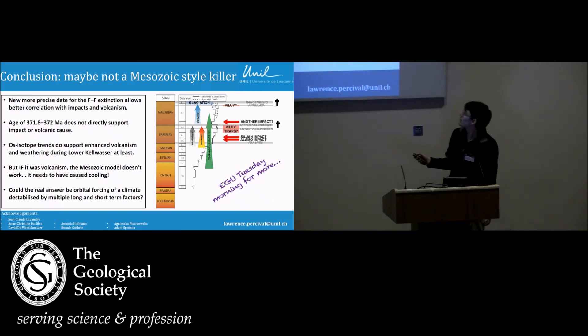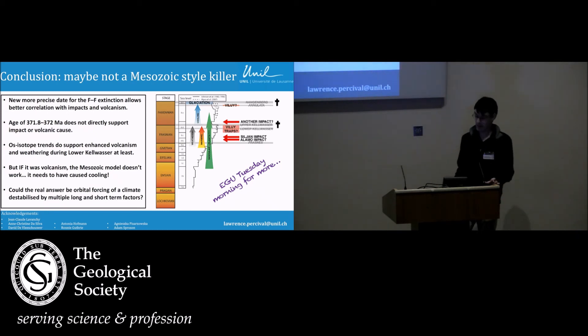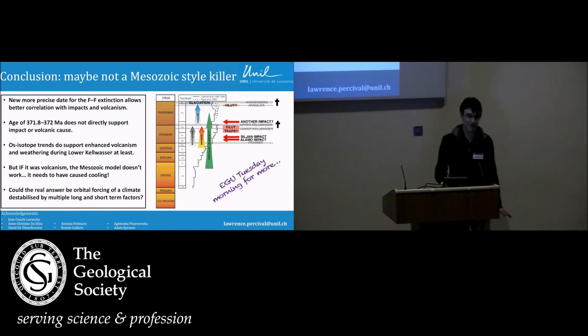With so many long-term and short-term processes going on in the late Devonian, could it just be lots of things destabilising the climate until something fairly nondescript breaks the camel's back? Hopefully there will be more of this at EGU if you're going to Vienna in a month's time on Tuesday morning. Thank you very much for listening today.